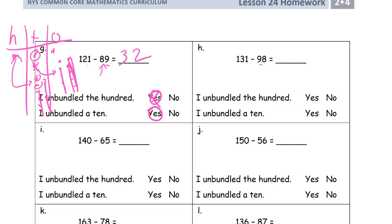This next one you could do in your head. If you're subtracting 98, that's almost like subtracting 100, but since it's 2 less, you'll have 2 more left. So for 131 minus 98: if you subtracted 100 you'd have 31 left, but add back the 2 extra, so you have 33 left. You'd have to unbundle a 10 because you only have 1 one and you're subtracting 8, and you'd have to unbundle the 100 because there's no 100 in the difference.